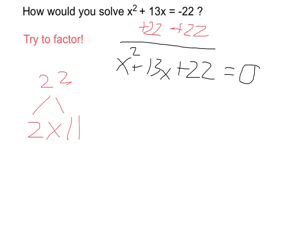So it will factor as follows. Again, 2 times 11 is 22, 2 plus 11 is 13. So this is representing the exact same thing as this, but it makes it much easier for us to solve.